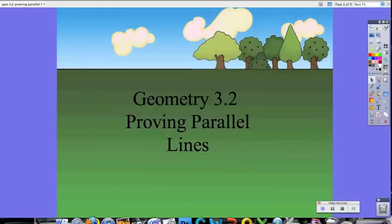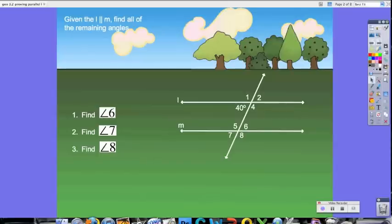So before we get started, let's take a look at a couple problems. Now, I'm giving line M and line M, and I'm telling you that they're parallel. Next, I'm saying find all the remaining angles. So we're going to look at problems 1, 2, and 3.